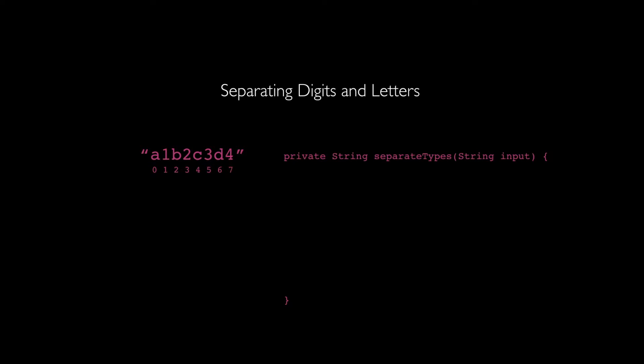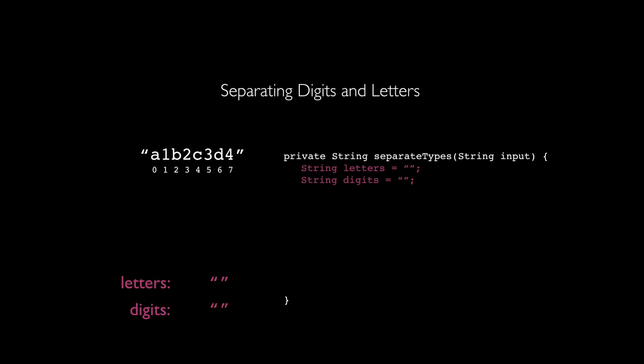Let's look at how we'll do this using code. We'll have a private method that returns a string — we're going to call it separateTypes — and it'll take a string as input. As a reminder, strings are zero-indexed lists of characters: A is a character, 1 is a character, B is a character, etc. The first thing we do is initialize two empty strings — one called letters and one called digits.